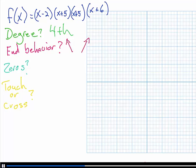Okay, so the zeros are at negative 2. I'm sorry, positive 2. Positive 2. Then I'm going to have a zero at negative 5 with a multiplicity of 2, because there are two factors that have a zero of negative 5. And I'm going to have a zero at negative 6.